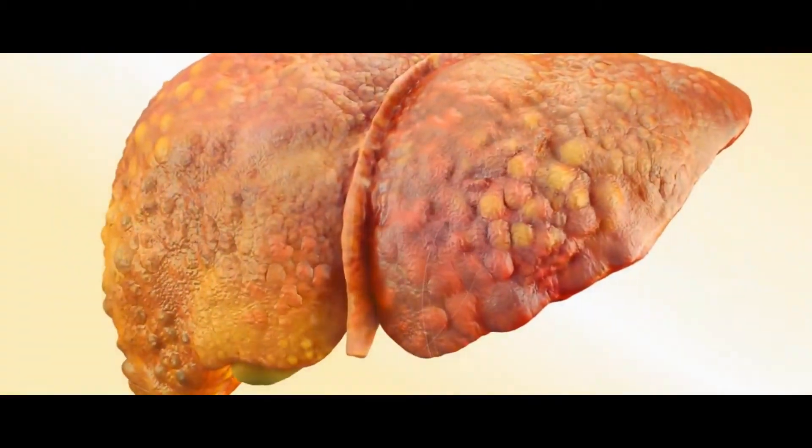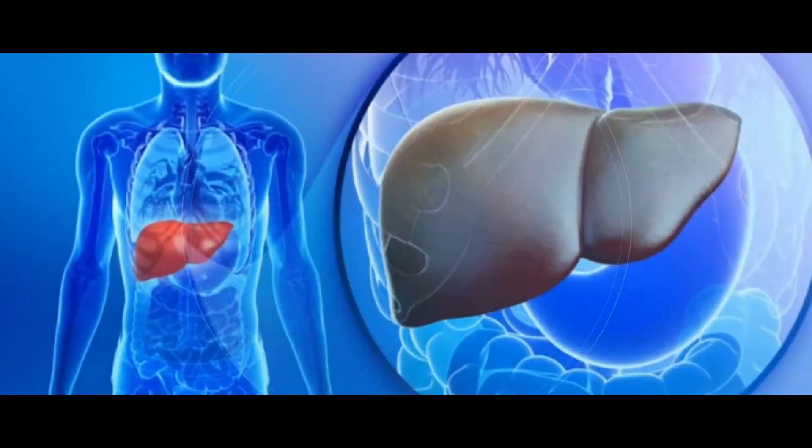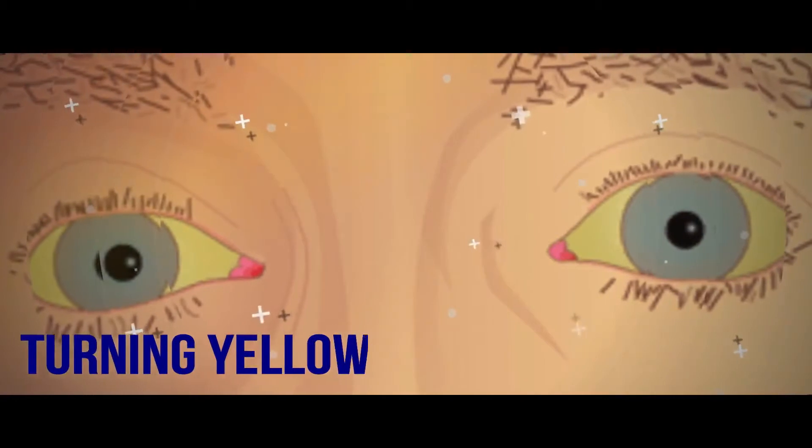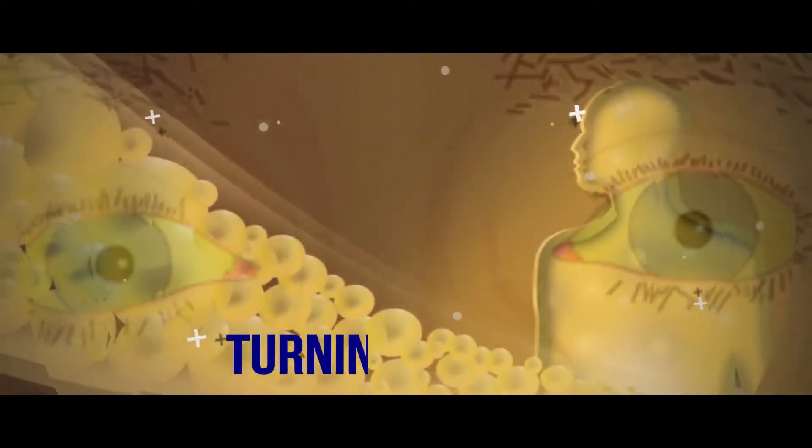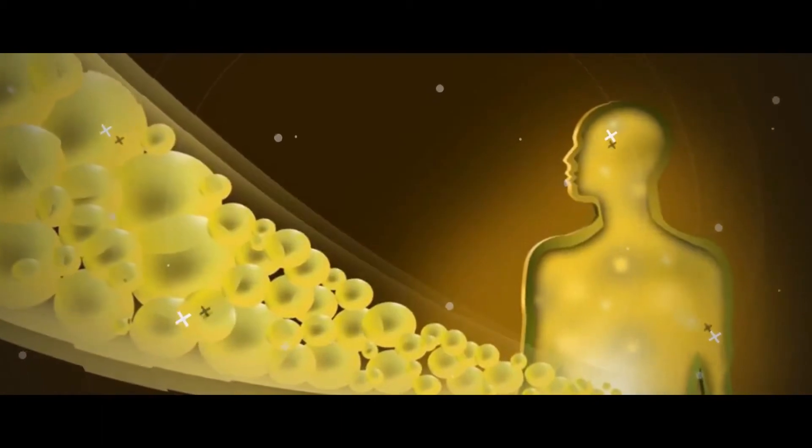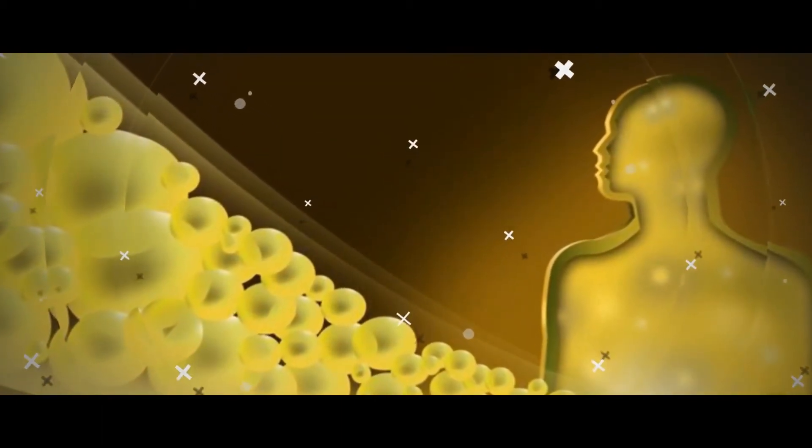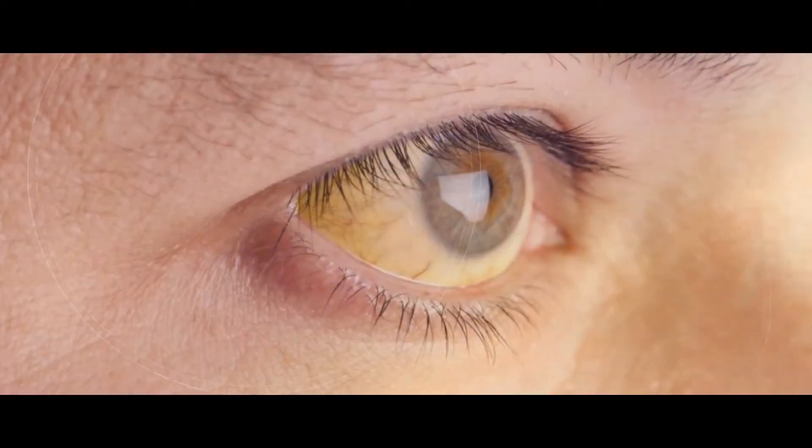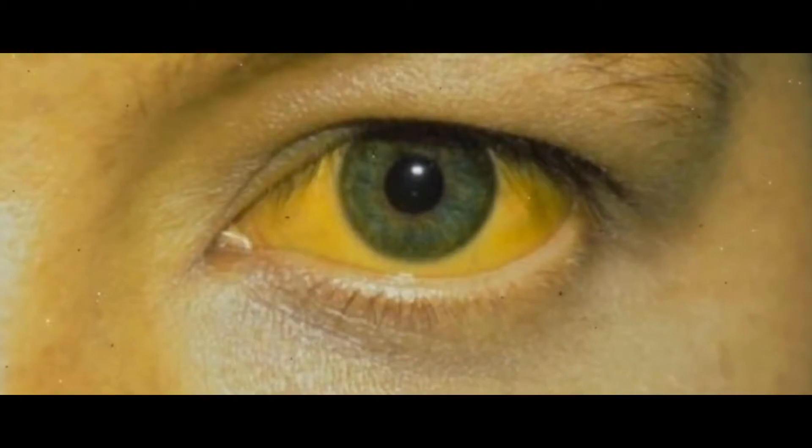Although the liver lies on the inside of the body, the body shows outward signs when something is wrong. Turning yellow: Your skin and the whites of your eyes could turn yellow when the liver isn't working properly, due to a buildup in the blood of a yellowish substance called bilirubin, according to the US National Library of Medicine.